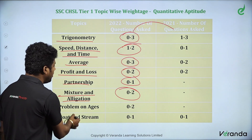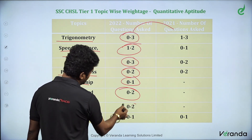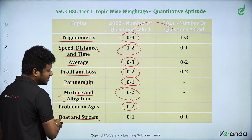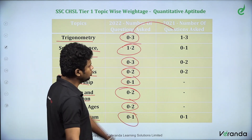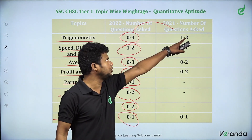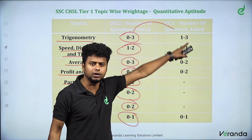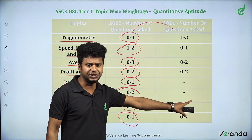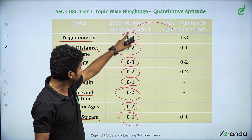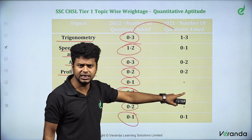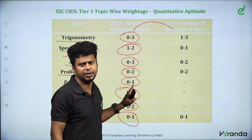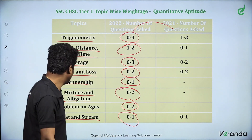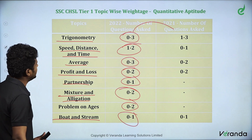Problems on Ages have 0 to 2 questions. Boats and Streams has 0 to 1 question. In 2021 and 2022, there were a number of questions on these topics — you can do the same preparation. Boats and Streams is a lower-priority topic.